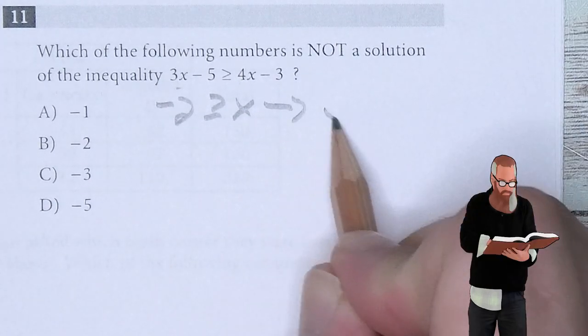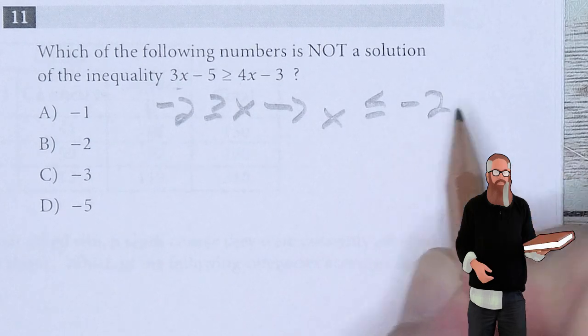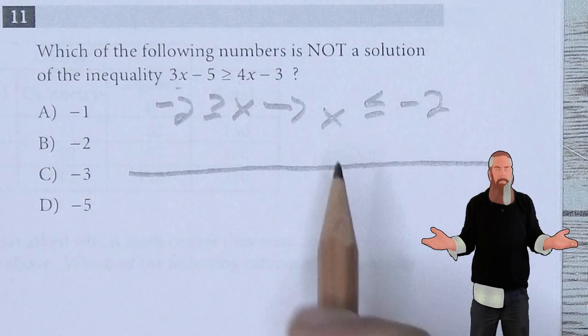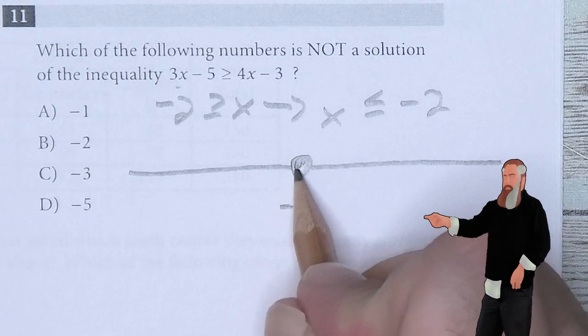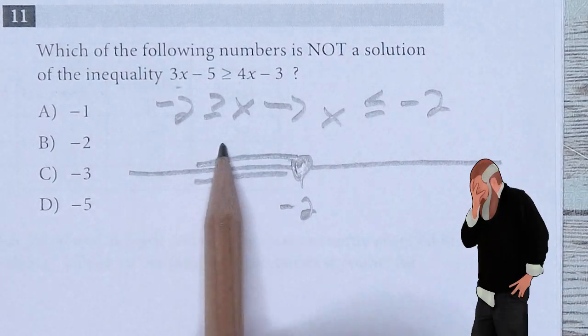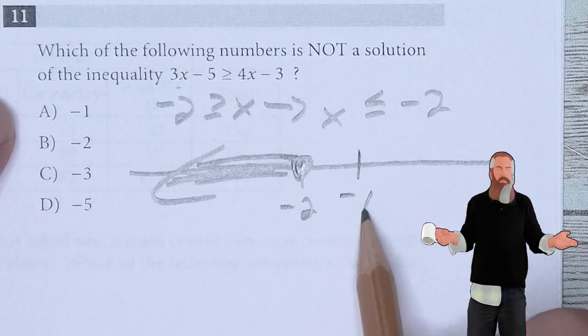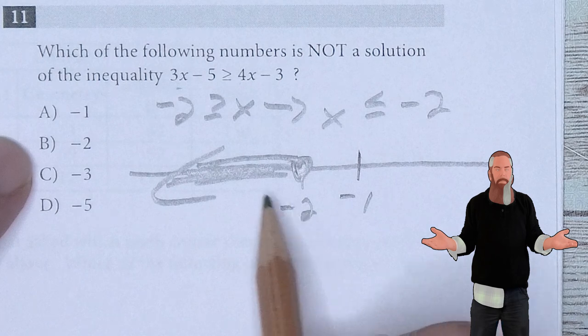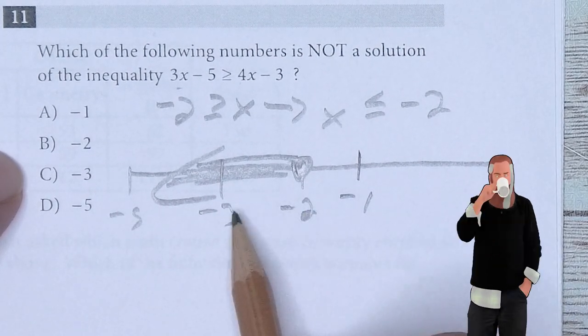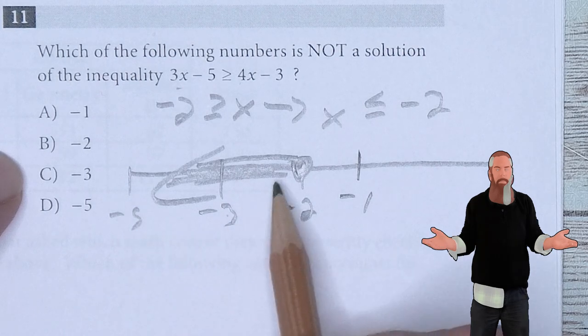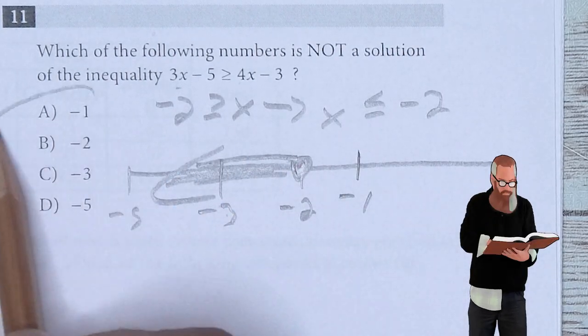I prefer to write this with the x on the left, giving me x is less than or equal to negative 2. Looking at a number line at negative 2, I have a solid dot and an arrow pointing to the left. The negative 2, negative 3 and negative 5 all appear in the shaded region, but the negative 1 does not. So A is the answer.